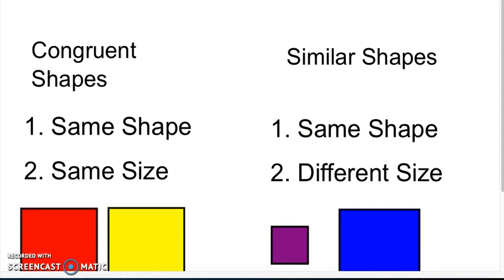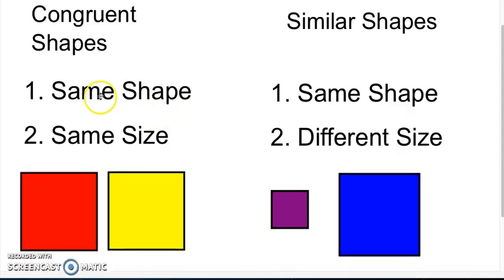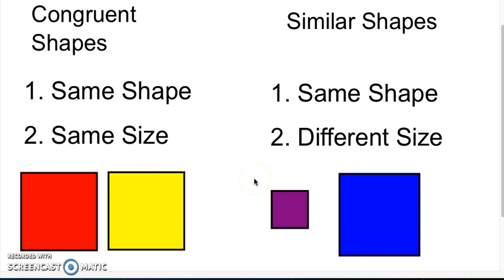Let's review. Remember, congruent shapes have to be the same shape and the same size. And similar shapes can be the same shape and it's okay if they're different sizes. Also, don't forget, the color or the way the shape is turned — its orientation — doesn't matter or change if a shape is congruent or similar.